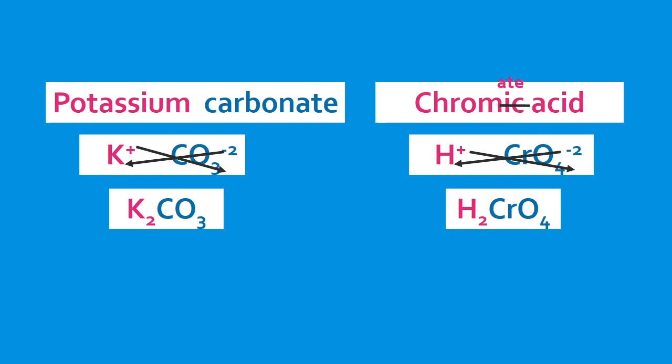That takes us to the end of this lesson. We looked at naming polyatomic ions, talked about oxyanions, naming acids, naming compounds that contain polyatomic ions, and using the name of a compound to determine its formula. Until next time — blessings.